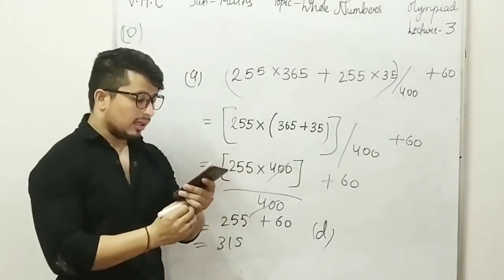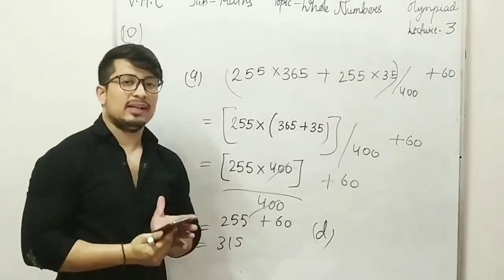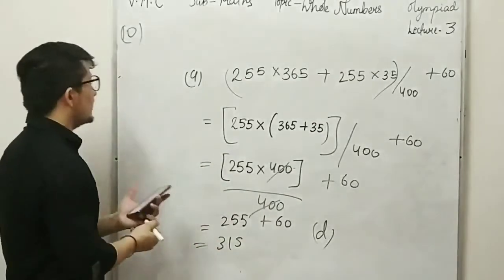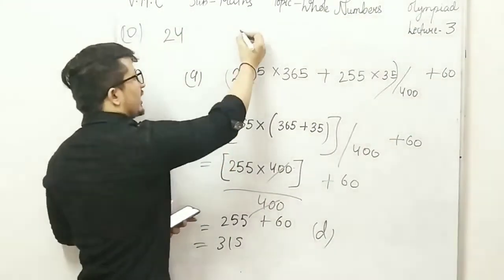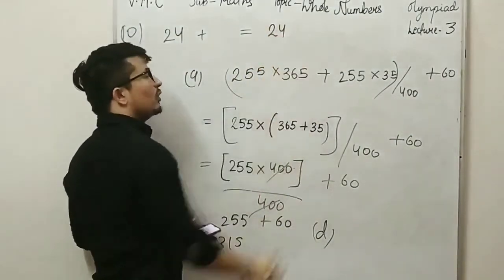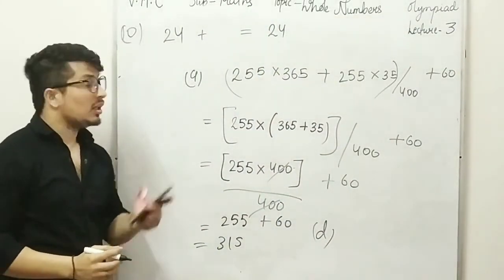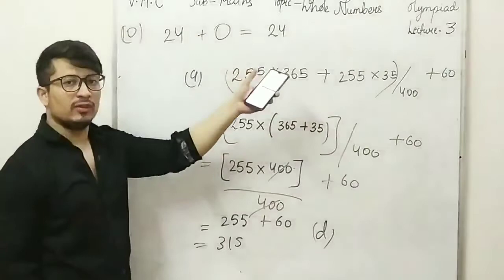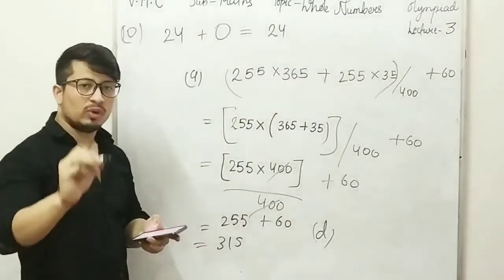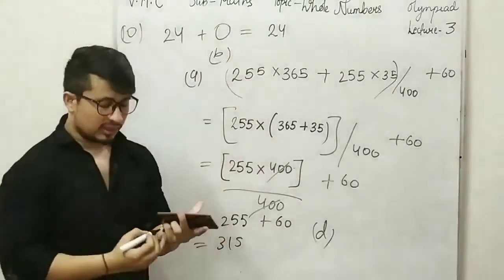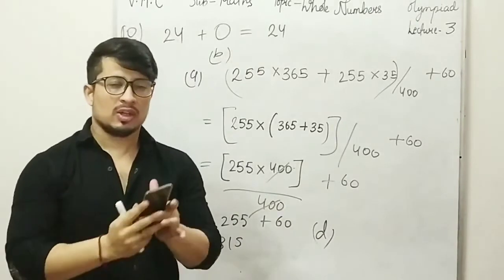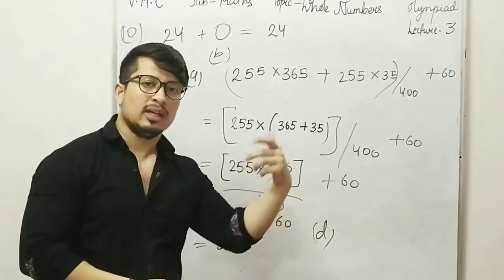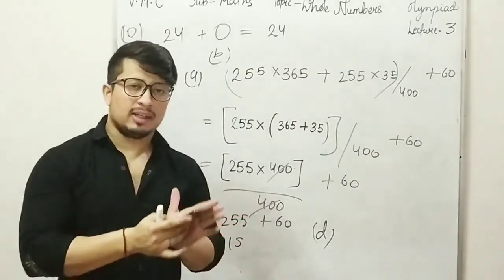Question 10: what is the additive identity of element 24? The additive identity is the number which, when added to any number, gives the same number as the answer. So 24 plus 0 equals 24 — the additive identity of 24 is 0, option B. Similarly, the additive identity of 16 is 0, because 16 plus 0 equals 16.